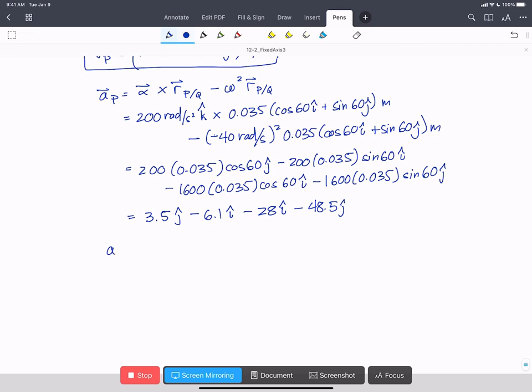And we combine those, we find that our acceleration of point P is going to be equal to minus 34.1 I hat minus 45.0 J hat meters per second squared.